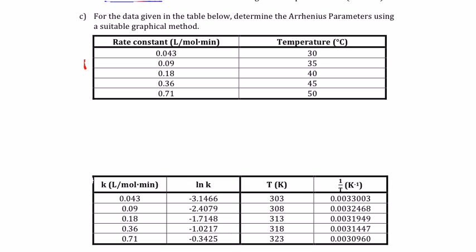The third and last part gives us a table and asks us to determine the Arrhenius parameters using a suitable graphical method. And first of all, with the rate constant that we're given and the temperature that we're given,